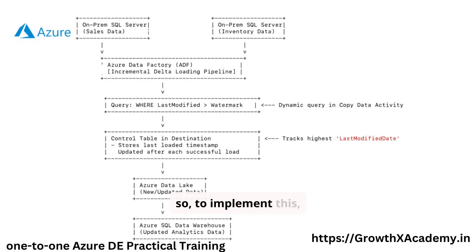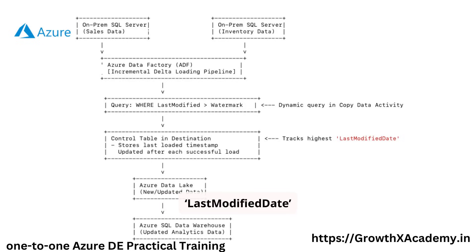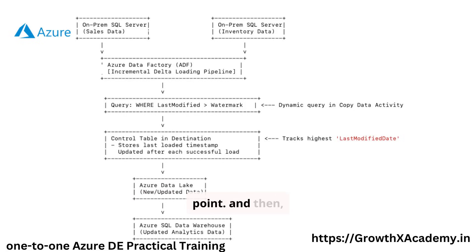To implement this, we first created a control table in the destination database. This table stored the highest Last Modified Date value from the previous load, which acted as our reference point. Then, in Azure Data Factory, we designed a pipeline to make this process seamless.